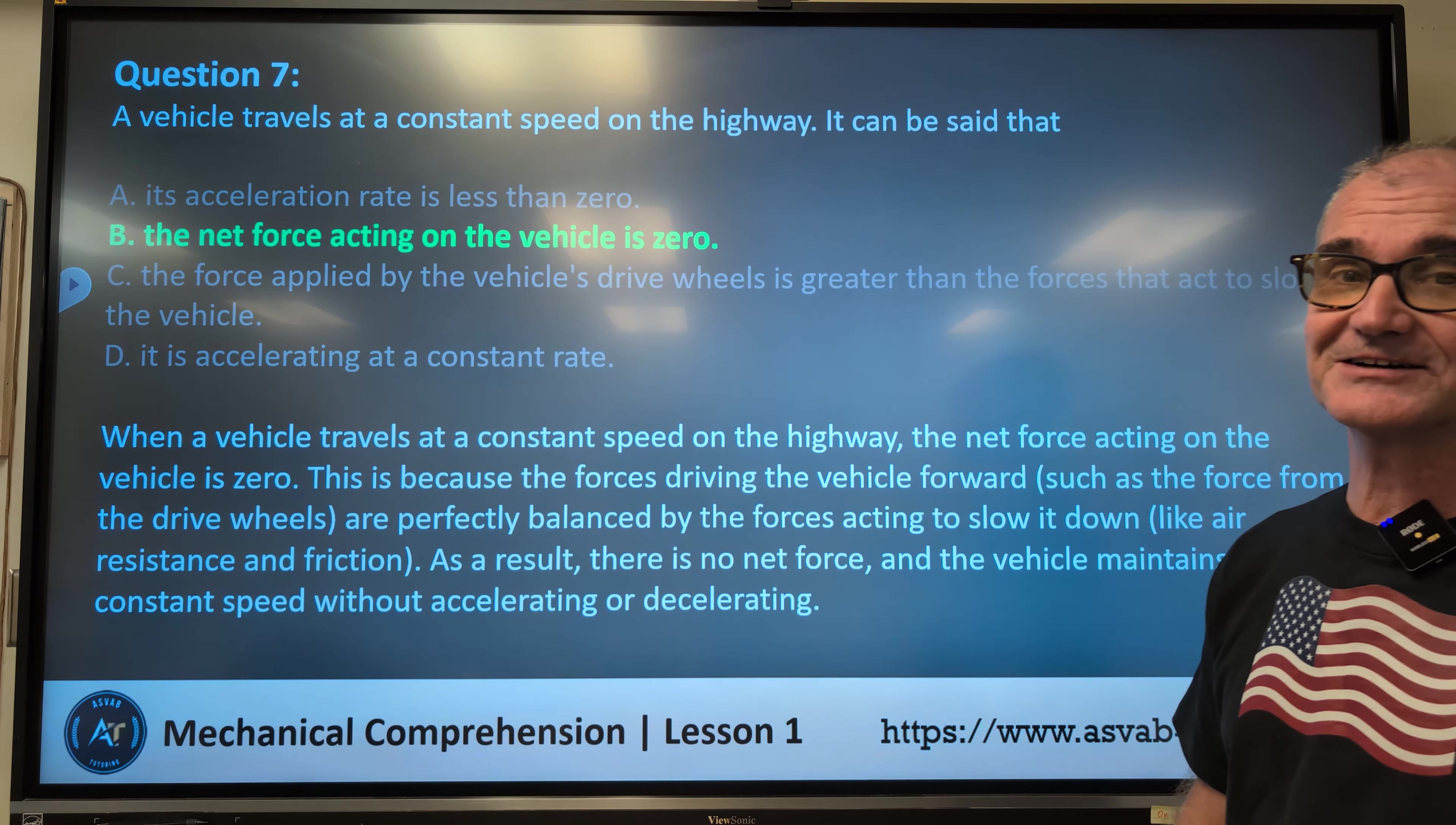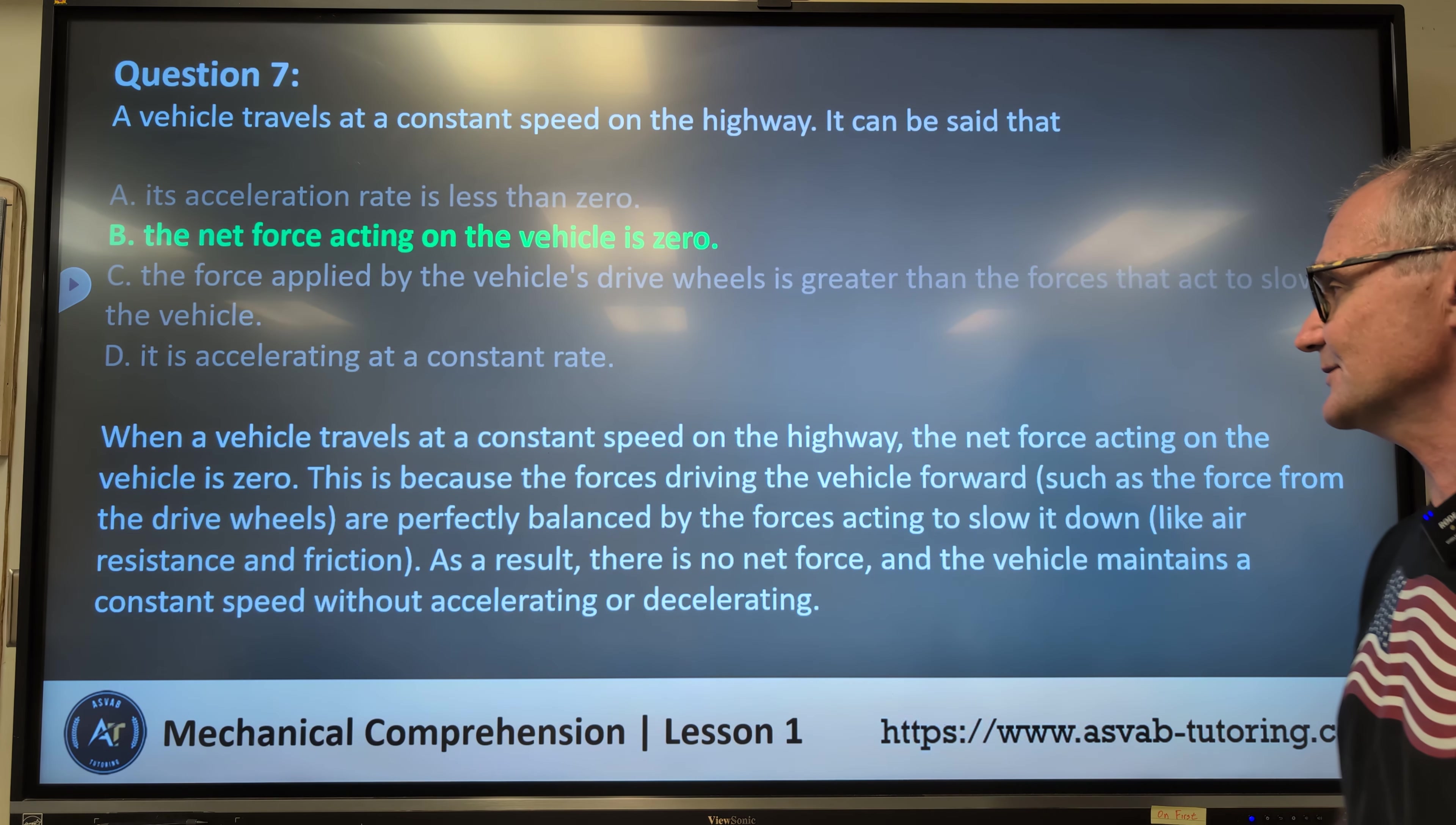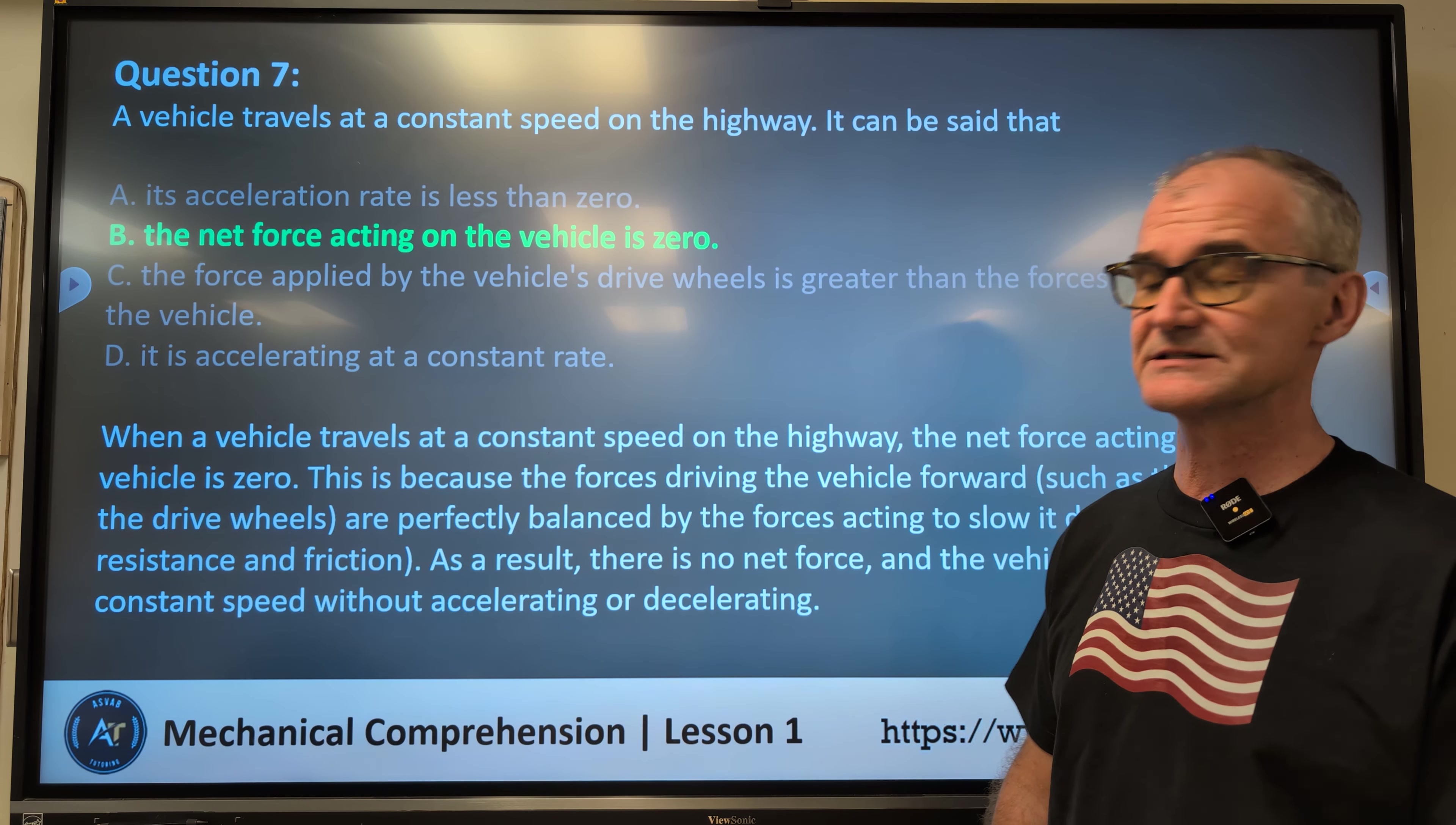Pause video. Correct answer is B, the net force acting on the vehicle is zero. When a vehicle travels at a constant speed on the highway, the net force acting on the vehicle is zero. This is because the forces driving the vehicle forward, such as the force from the drive wheels, are perfectly balanced by the forces acting to slow it down, like resistance. As a result, there is no net force, and the vehicle maintains constant speed without acceleration or deceleration.